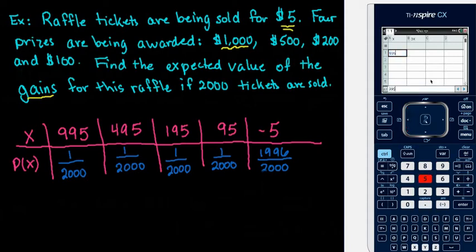I would start with my gains, the $995, $495, $195, $95, and then the negative 5.